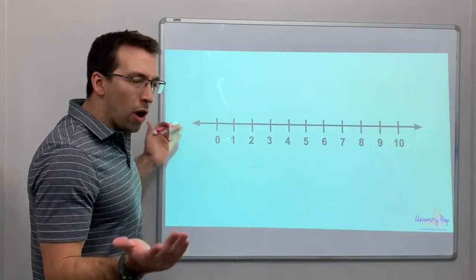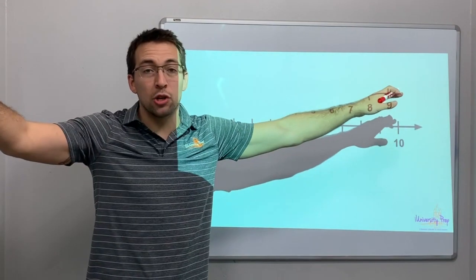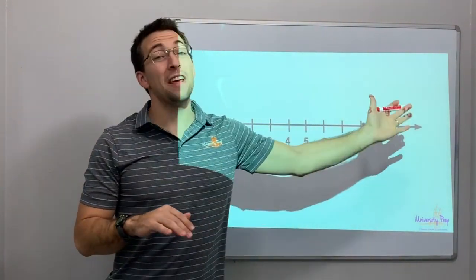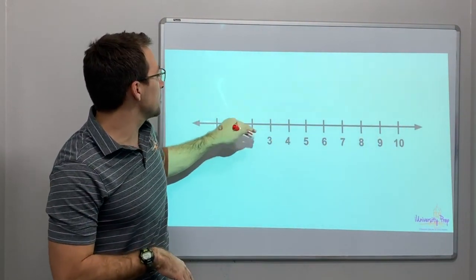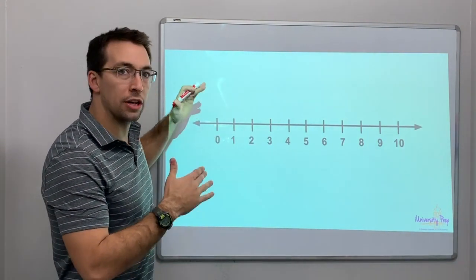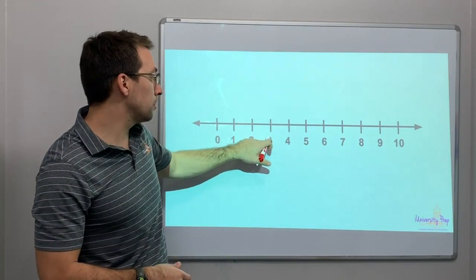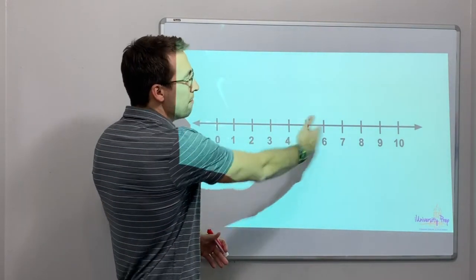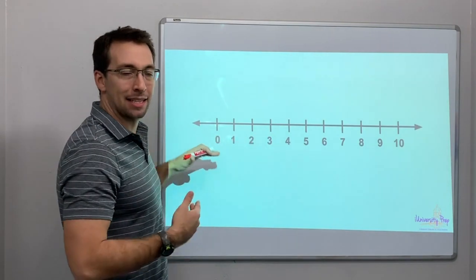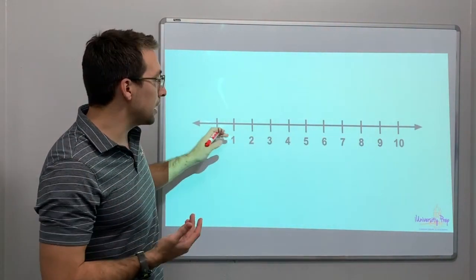So what is a number line? A number line is just a line. It goes on toward infinity and the integers, the hash marks, the tick marks are even numbers. So 0, 1, 2, 3, 4. It's the same space, the same value increase between each tick. So this is a number line 0 to 10.